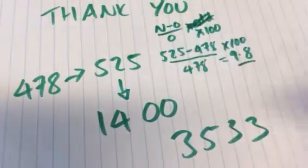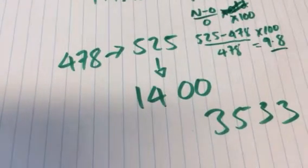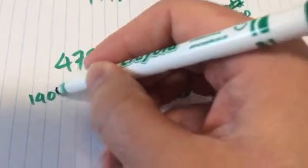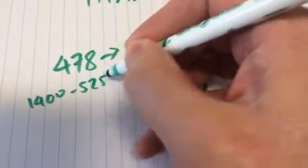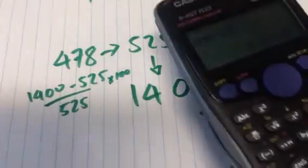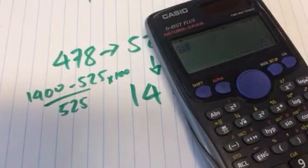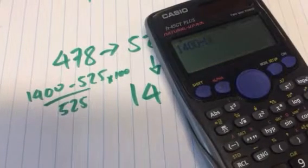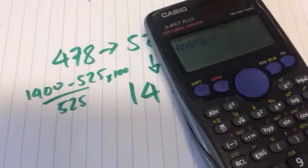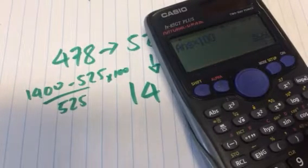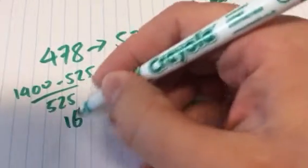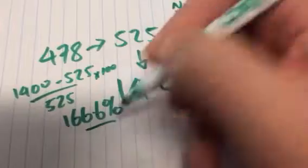Then going up to 1400 from 525. Okay, so you do 1400 minus 525, and then you divide it by 525, and then you times that by 100. Okay, so let's go through that again. 1400 minus 525, divide by 525 and times that by 100, which gives you 166.6%. So well done to those who got that one.